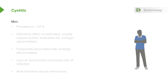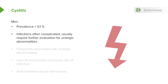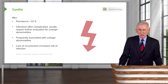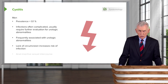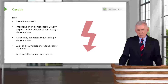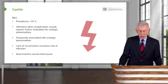Men, on the other hand, have a very low prevalence of cystitis — less than 0.1%. When a man has cystitis, we have to look for a complication, because there's usually some kind of obstructive uropathy, duplicating collecting system, or some anatomical explanation, and we must work them up for urologic abnormalities. Lack of circumcision predisposes some men to cystitis, and among men who have sex with men, anal-insertive sexual intercourse is a predisposing factor.